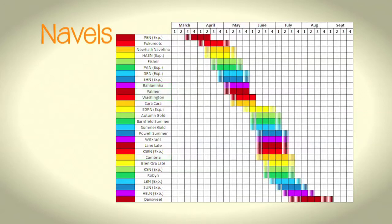Early navel cultivars mature from as early as late March and April, while the late varieties stretch into the season as late as August.